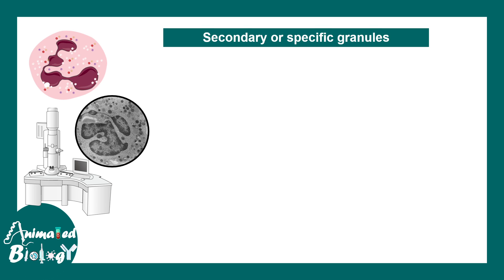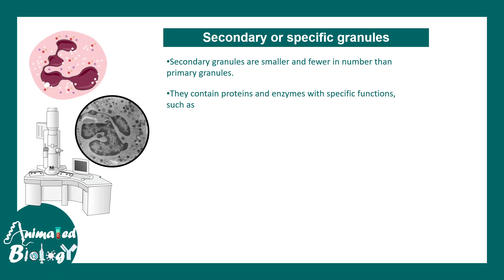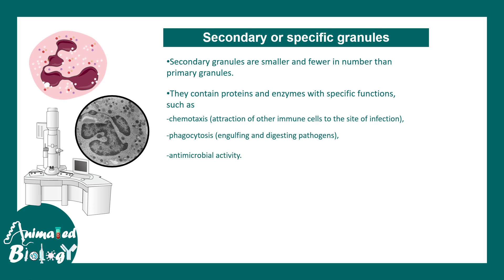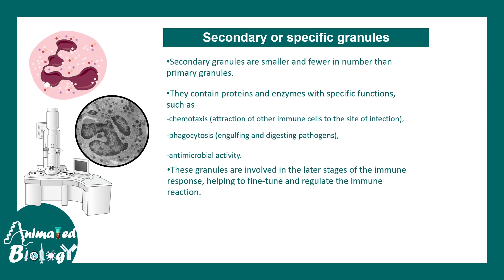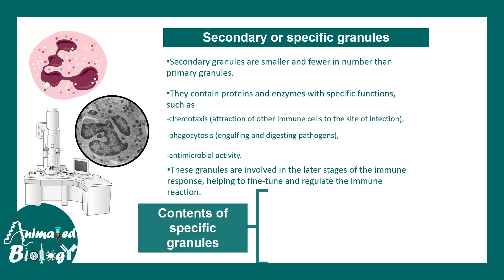Secondary or specific granules have been characterized using scanning and transmission electron microscopy studies. They are smaller in size compared to primary granules and fewer in number. They contain proteins and enzymes with specific functions — many of their contents help in chemotaxis, phagocytosis, or have antimicrobial activity. Overall, the goal is to fine-tune the immune system.